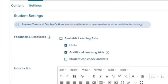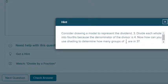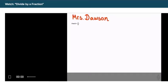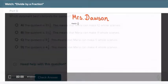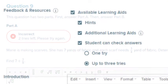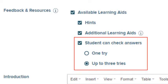At the top, you can select learning aids to assist your students, such as providing hints, additional resources for students to view or listen to, or giving your students the ability to check their answers. You determine how many tries they have.